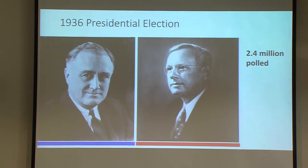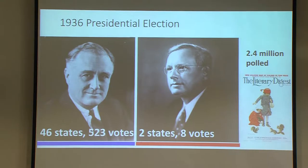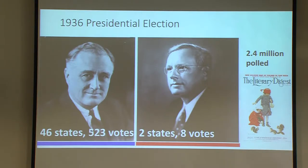The rest was history. It turns out FDR carried 46 states with 528 electoral votes, while Landon got only two states with eight electoral votes. So how did such a large-sample public opinion poll get so wrong? It turns out the big data set was from a magazine called the Literary Digest, which surveyed its own subscribers — skewed towards automobile owners and telephone subscribers. In other words, if we trust public opinion on a national policy to a Fox News or CNN poll, we will be deadly wrong.